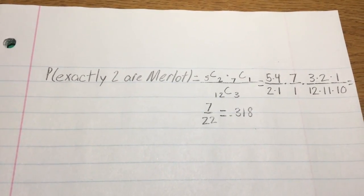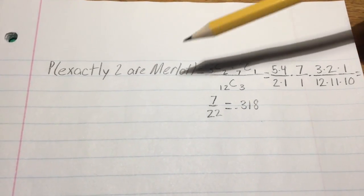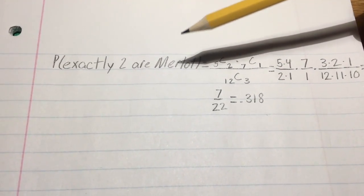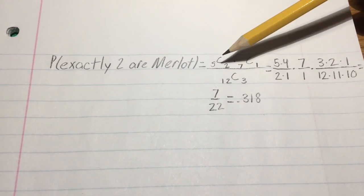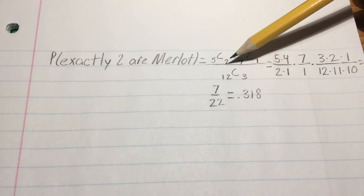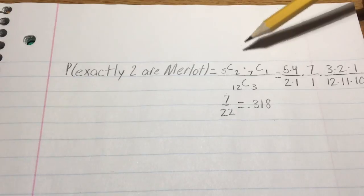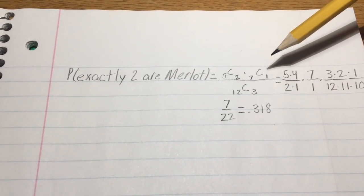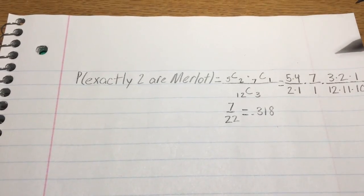So for this problem, we will be using the permutation formula. So the probability that exactly two of the bottles are Merlot, first off we would have our permutation of two Merlot bottles of the five in the crate, multiplied by the permutation of one Cabernet bottle being selected from the seven in the case.